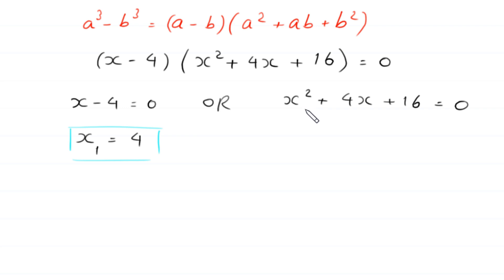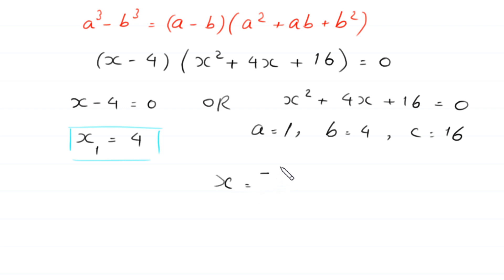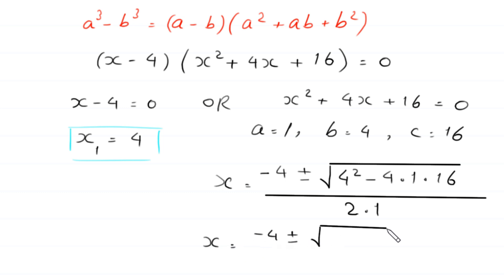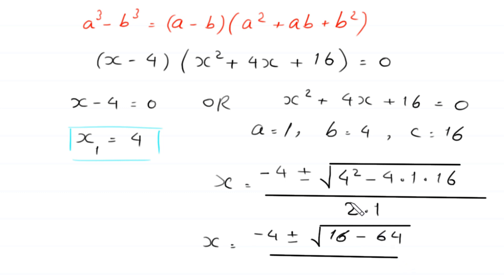This quadratic equation is not factorable, so we solve it using the quadratic formula. In this equation, a equals 1, b equals 4, and c equals 16. According to the quadratic formula, x equals negative b, which is negative 4, plus or minus the square root of b squared — that's 4 squared — minus 4 times a times c, which is 4 times 1 times 16, all divided by 2 times 1, giving 2.